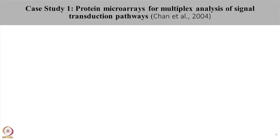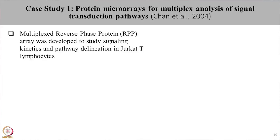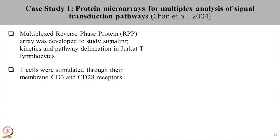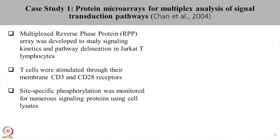High throughput platforms like protein microarrays can hold immense value to screen multiple proteins together and can be used to decipher protein-protein interactions. Let us start with one of the case studies where Chan et al. used protein microarrays to understand the pathway of T lymphocytes upon activation with CD3 and CD28 antibodies. Chan et al. made multiplex reverse phase protein microarrays and used them to study pathways in T cells activated upon stimulation with CD3 and CD28 molecules. To validate the system, they took the Jurkat T cell lines and activated them with PMA.